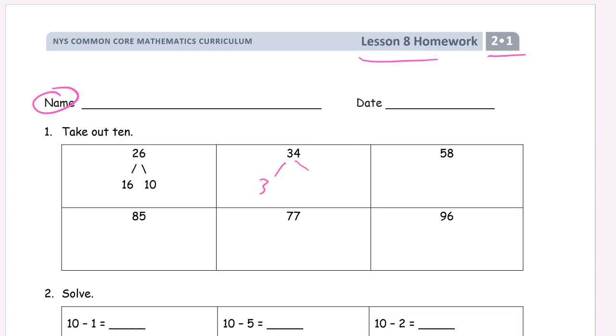That's 34. We take out 10 here, we're going to have 24. The ones digit won't change because we're only taking out tens, we're not taking out any ones. So the ones digit will stay the same, but the tens digit will be one less because we're taking out one 10. So 34 is 24 and 10.